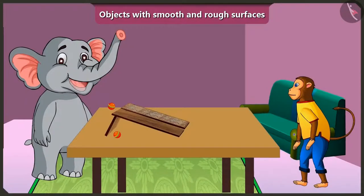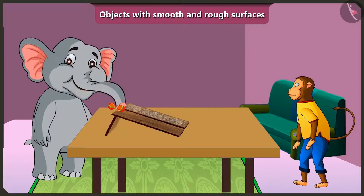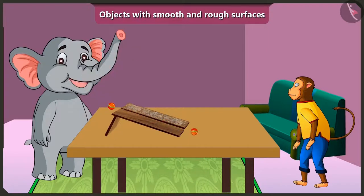Yes, now I understood. The ball rolls faster on this wooden slope because this slope has a smooth surface, which means it is very smooth. And the ball rolls slowly on this slope because this slope has a rough surface, which means its surface is very rough. Well done Appu.